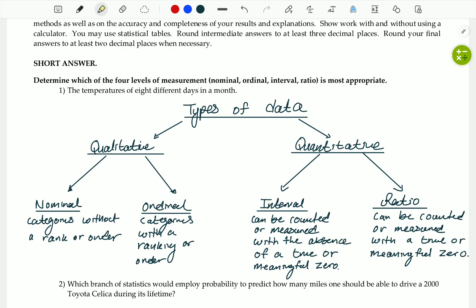Ordinal are categories with a rank or an order. For example, the letter grade you receive in the class. A, B, C, D. There's a rank in A is the highest, then it's B, then it's C, then it's D.